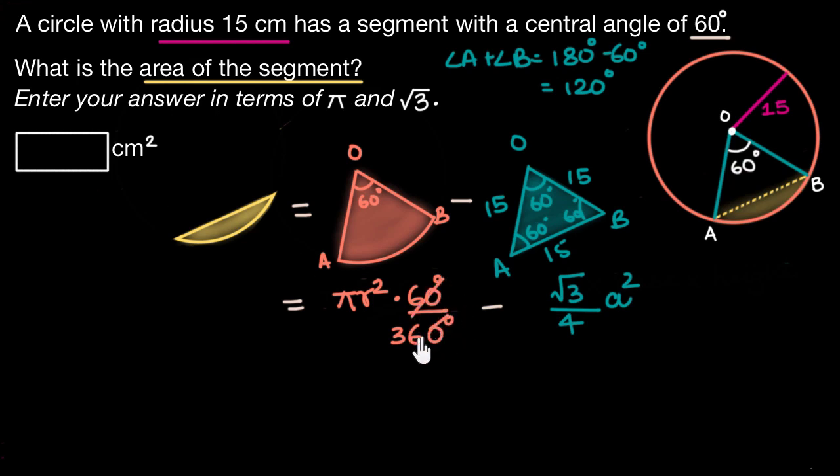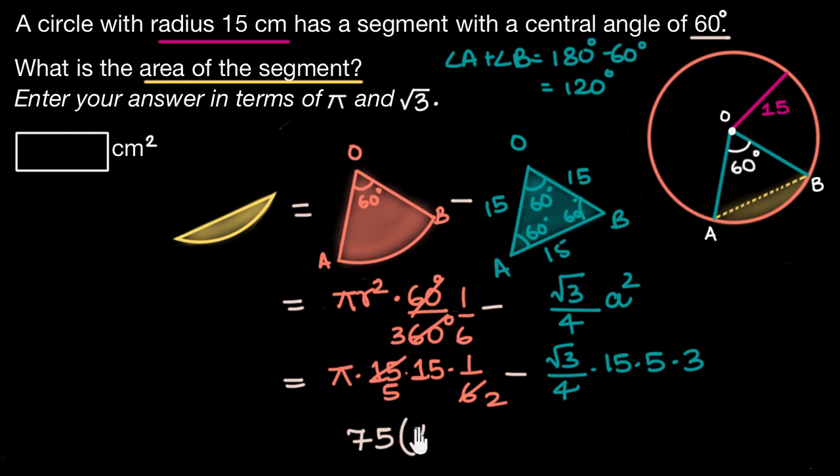Over here 60 by 360 is 1 by 6 so this becomes π times r² which is 15 times 15 as the radius is 15 times 1 by 6. So 3 times 2 is 6, 3 times 5 is 15 and over here we have √3/4 times 15². I'll write the other 15 as 5 times 3 and you'll know in a second why I did that. Now all we have to do is subtract these two. So we can take 15 times 5 common out of these terms.